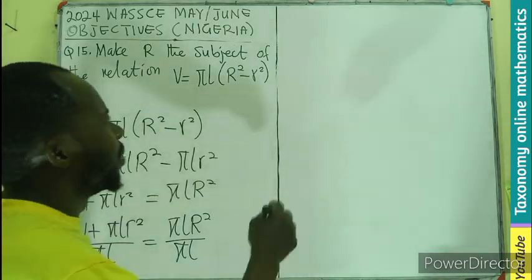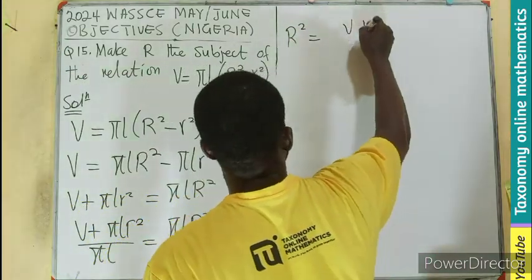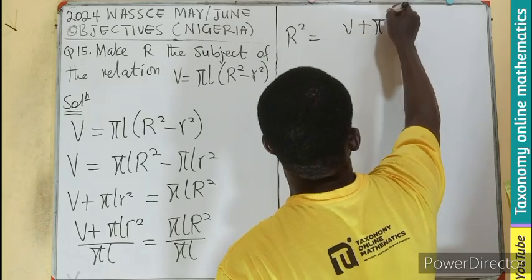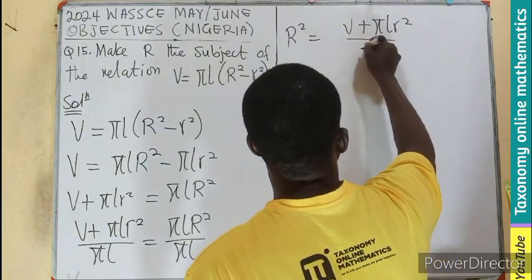You can see that π L will cancel, meaning your R square will be V plus π L small r square divided by π L.